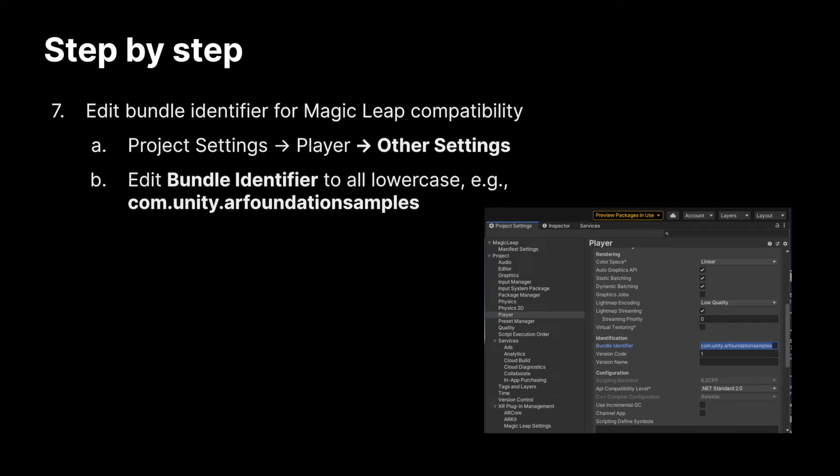If you're not familiar with the bundle identifier, it's the unique string ID for your application. Think of it as your application's username, and the recommended standard is to use reverse domain name notation. For example, for us we may use com.magicleap.applicationname, such as com.magicleap.test. For development, we may use com.magicleap.dev.test. Keep in mind that the bundle identifier should be all lowercase — avoid spaces and special characters besides the period to be safe.